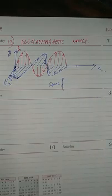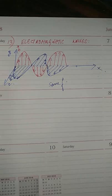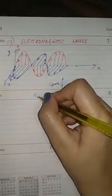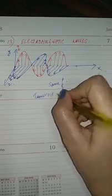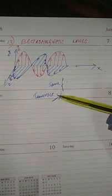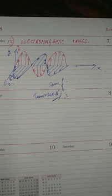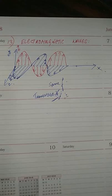Maxwell was the one who predicted that electromagnetic waves can travel in free space with the speed of light. He concluded that light itself is an electromagnetic wave, which is transverse in nature. This is a very important property to remember: electromagnetic waves are transverse waves. Other examples of electromagnetic waves are radio waves, microwaves, infrared rays, ultraviolet rays, X-rays, and gamma rays — even sunlight is an electromagnetic wave.